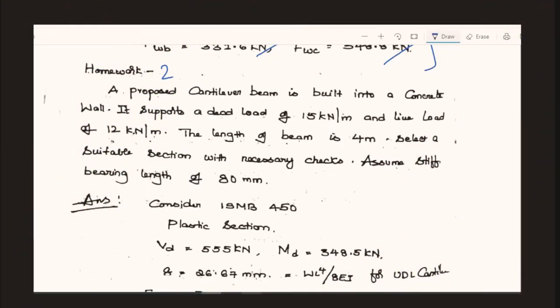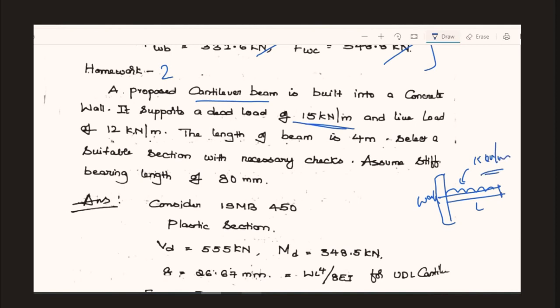This is homework question number two. This is a proposed cantilever beam built into a concrete wall of length L. It is supporting a dead load of 15 kilonewton per meter as a UDL, a live load of 12 kilonewton per meter, and the length of the beam is 4 meters.